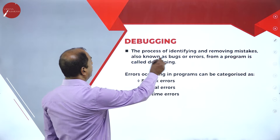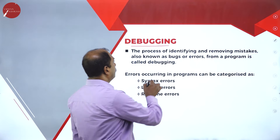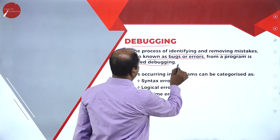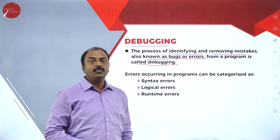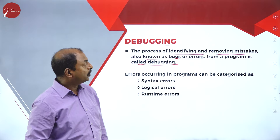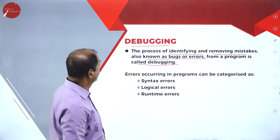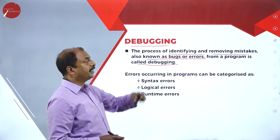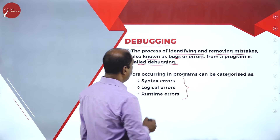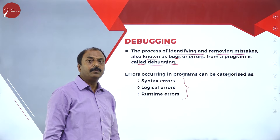We move on to the next concept: debugging. Debugging is the programming concept of identifying and removing mistakes and making corrections in a program. Now if we talk about errors, there are three types of errors: one is syntax error, second is logical error, and third is runtime error.